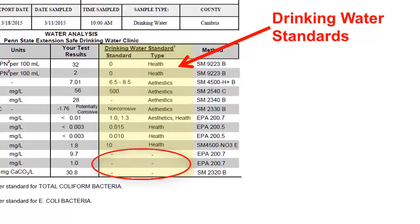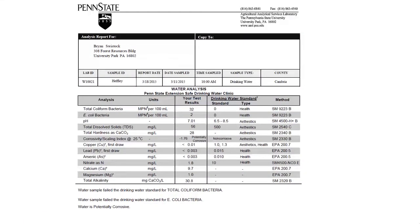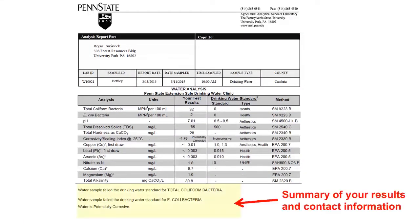You'll also notice that some parameters have no drinking water standards at all. The final column on the report shows the standard method or EPA method that was used to test your water for each analysis. These methods are required as part of the state lab accreditation program. Below the table of results, you will see a summary showing which, if any, of the analyses violated a drinking water standard. There will also be contact information for an extension water resources educator who can help answer any questions you have about your drinking water test report.